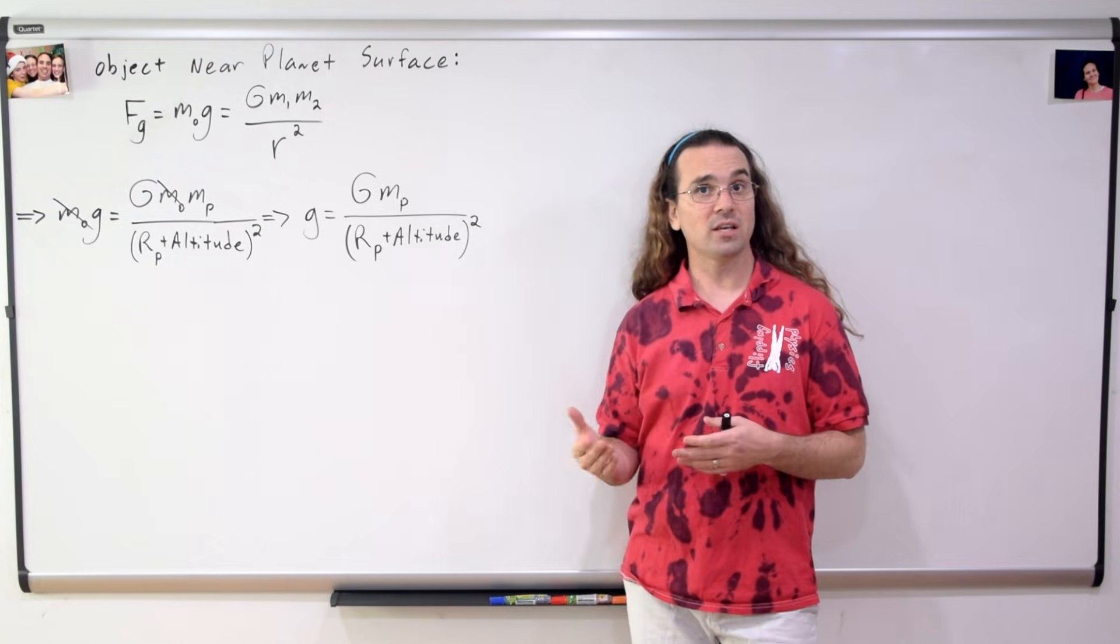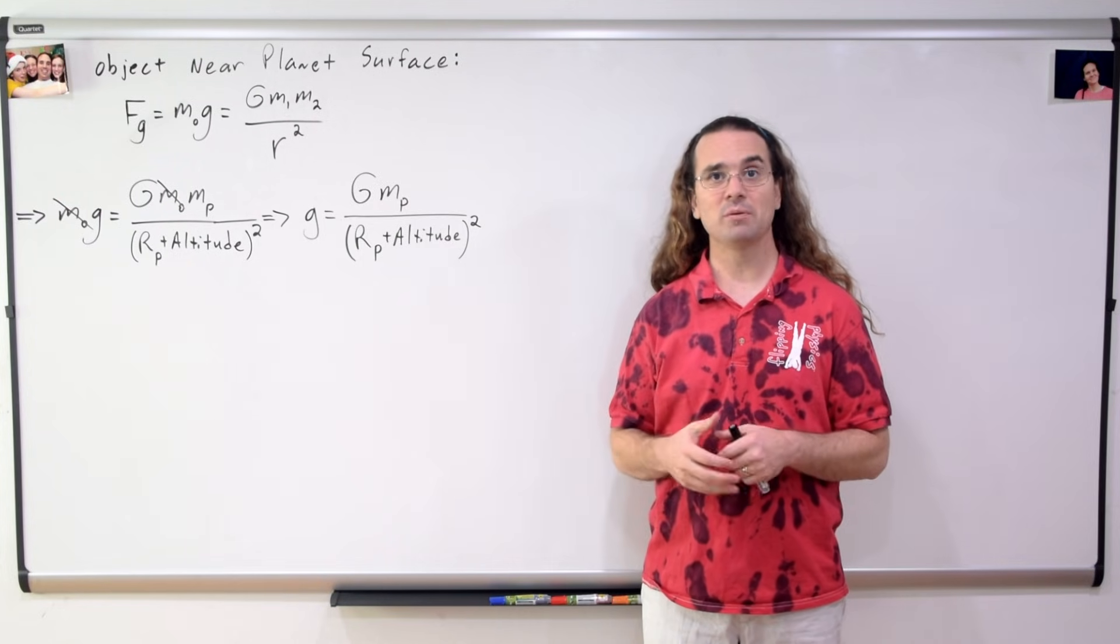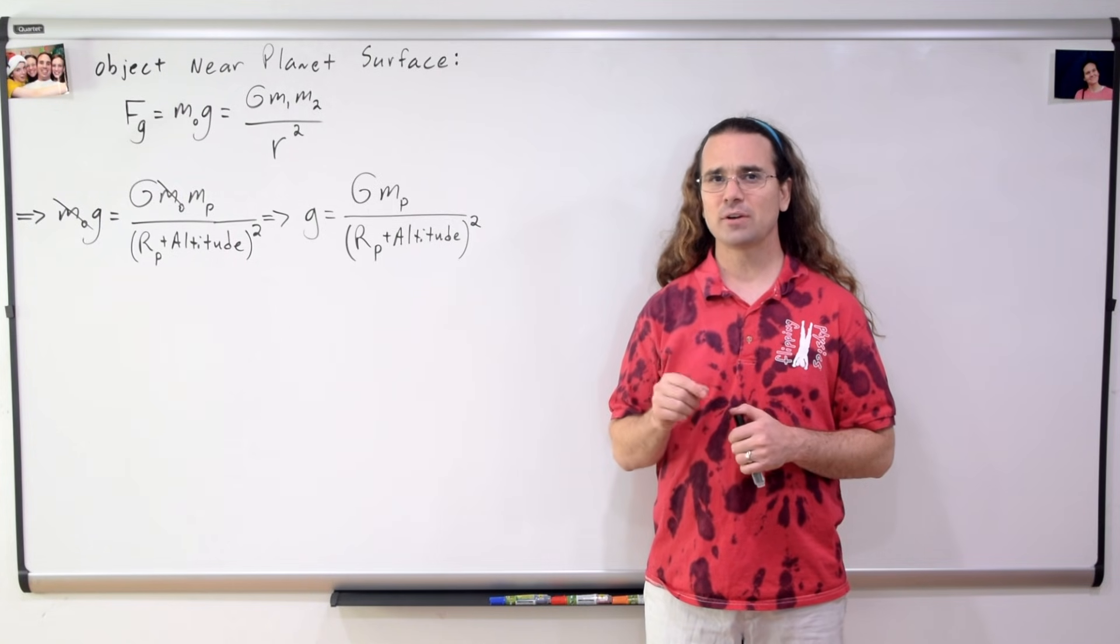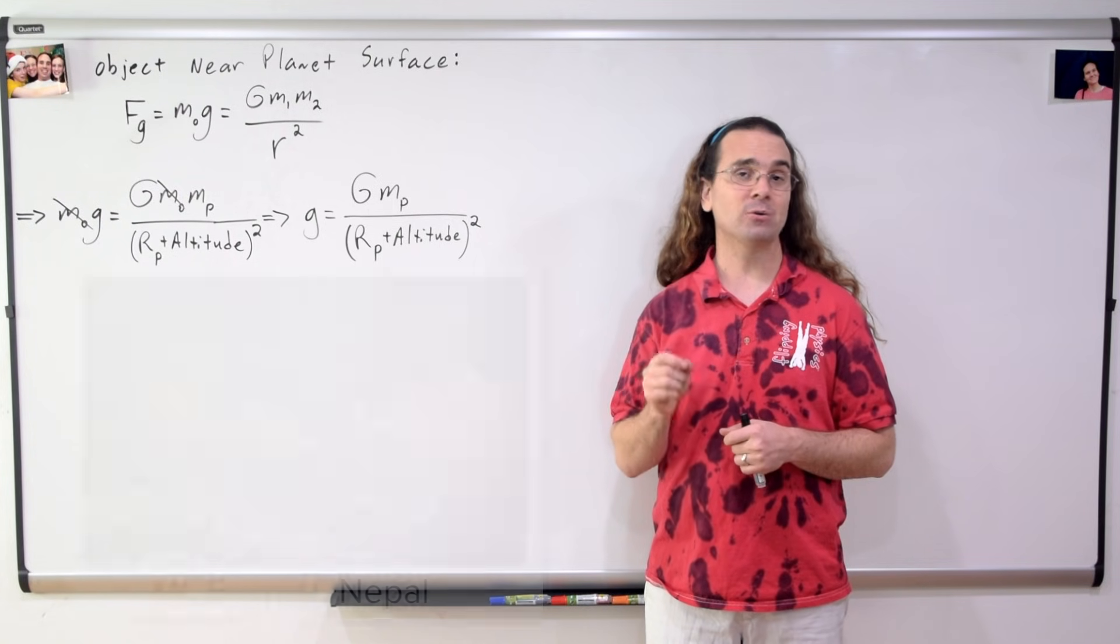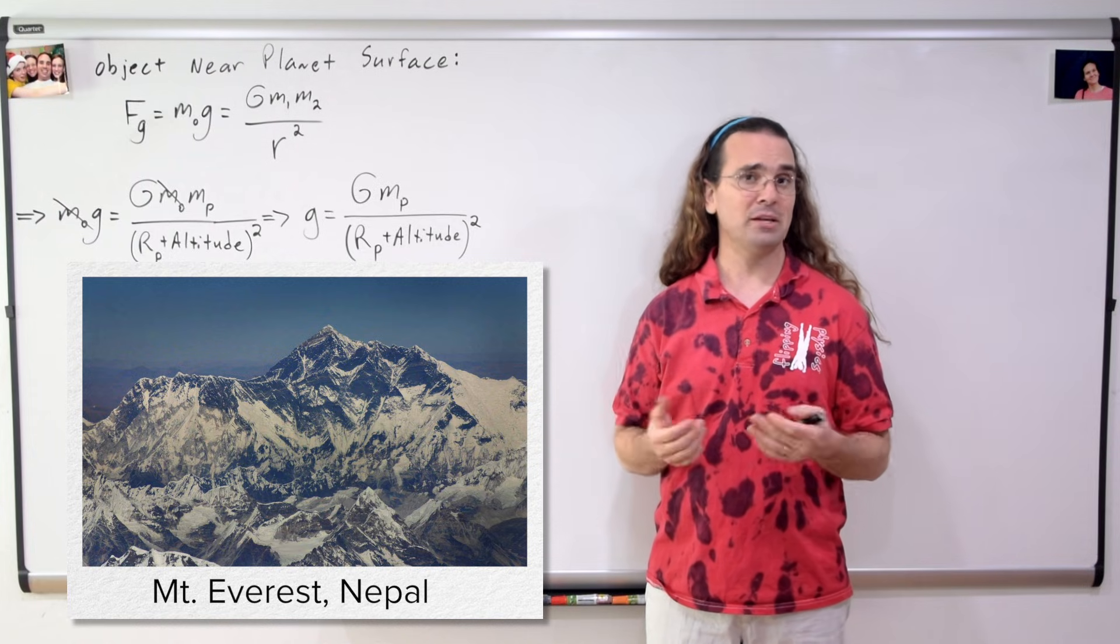We already know the acceleration due to gravity here on planet Earth is generally defined as 9.81 meters per second squared. But let's find the acceleration due to gravity at the top of Mount Everest. In order to do so, we need some information.